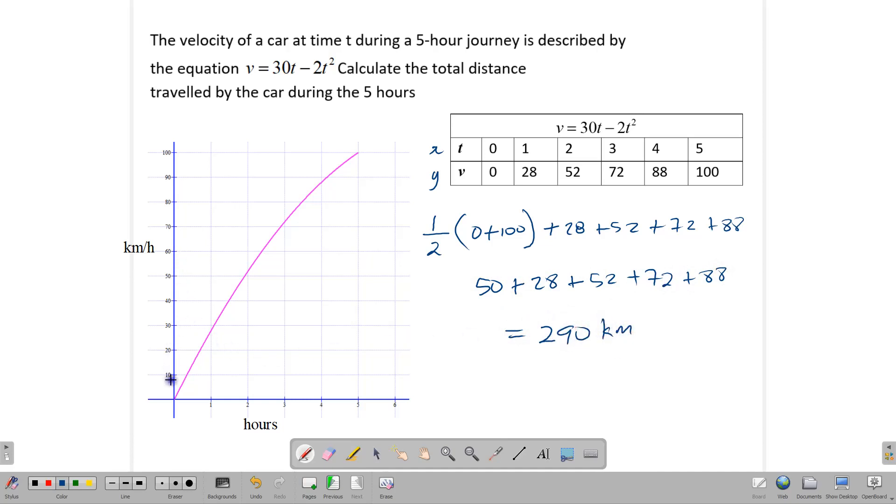Remember, if you want to find the distance traveled on a speed time graph, you must find the area under that part of the graph. In this question, this car would have traveled approximately 290 kilometers. It's an approximate answer because we're using approximations. If we use algebra such as calculus, we would have gotten a more exact answer. But I'm telling you, this answer comes pretty close.